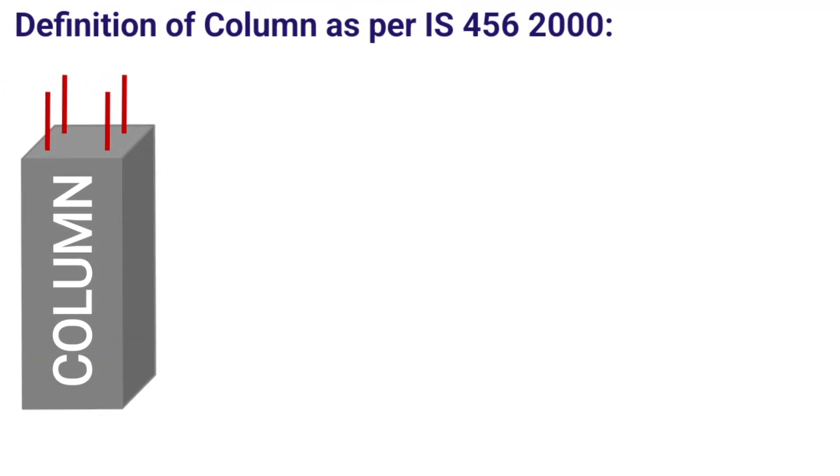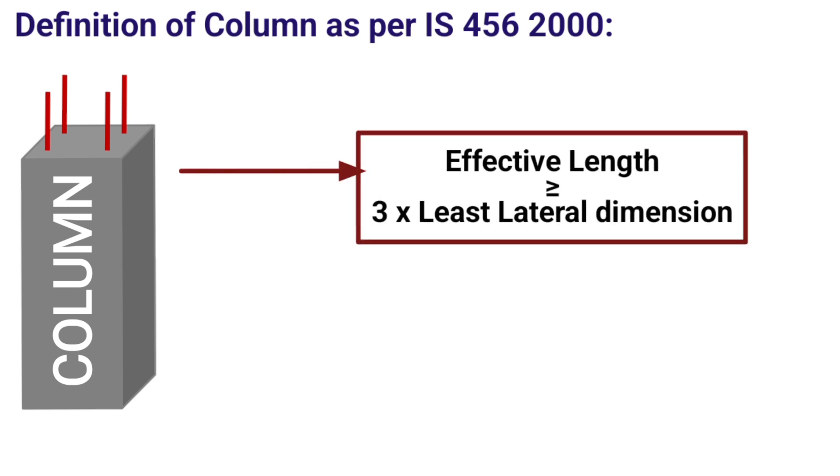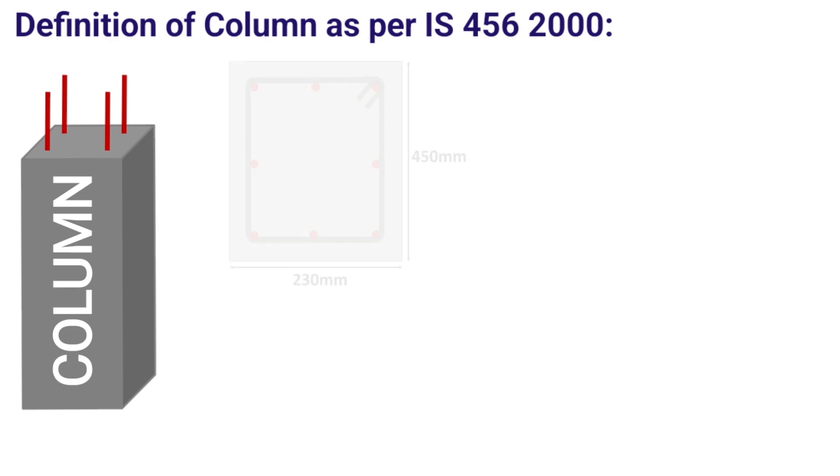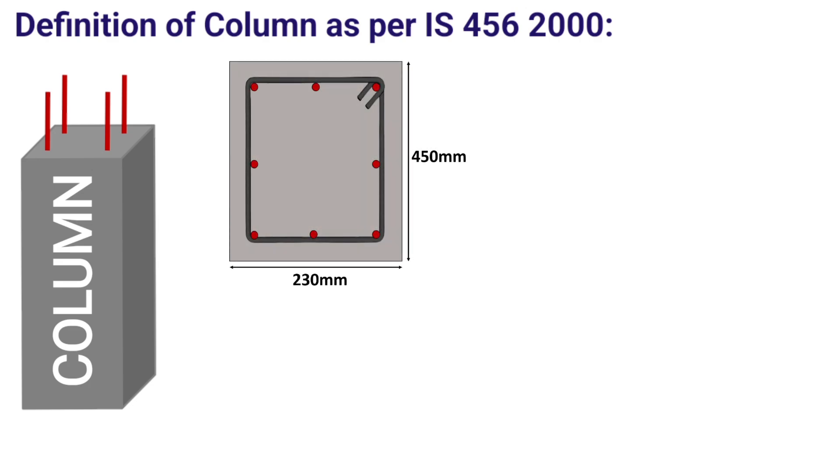As per IS 456-2000, column is a compression member, the effective length of which exceeds three times the least lateral dimension. By the term least lateral dimension, we mean the small side of the column cross section. For illustration, if we have a column of size 230 x 450 mm, its least lateral dimension would be 230 mm.